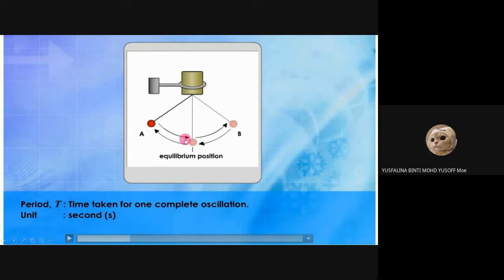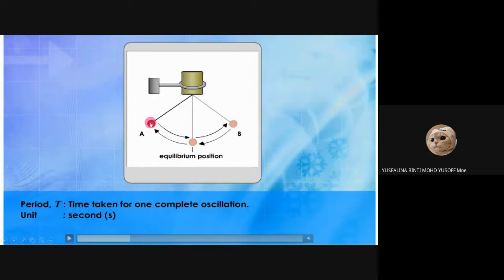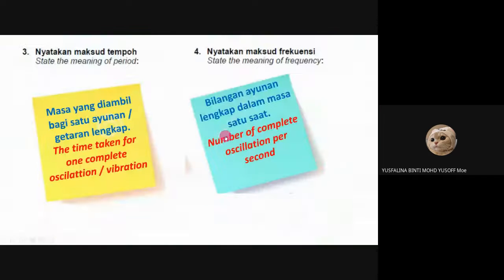The period is the time taken to complete one oscillation — for example, from A to B and back to A. If it takes 10 seconds, then the period for one complete oscillation is 10 seconds. That is called the period. The frequency is the number of complete oscillations per second.